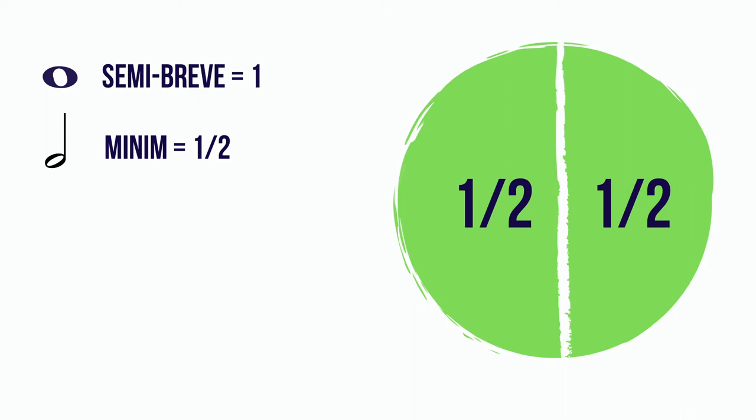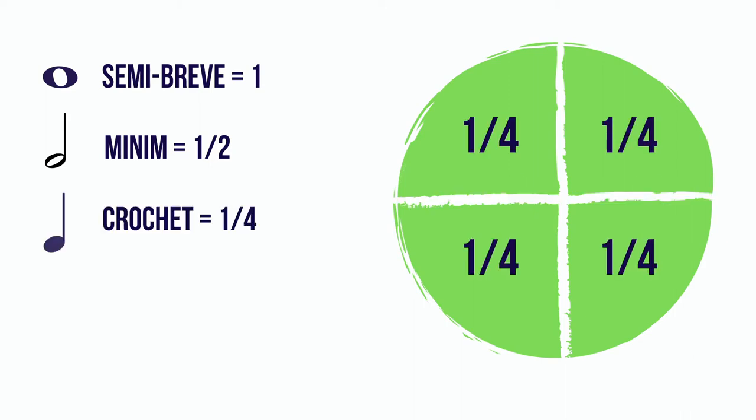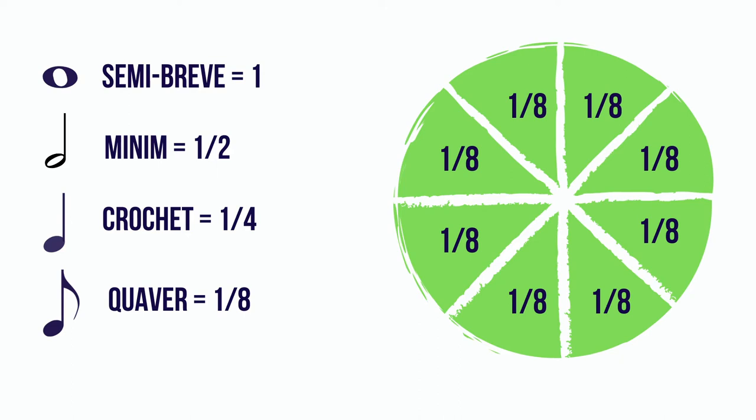If we cut the circle in half again, that gives us 4 quarters — a crotchet is known as a quarter note. And lastly if we cut the circle in half again we've got eighths, and an eighth note is also known as a quaver. So to recap: a semi-breve is a whole note, a minim is a half note, a crotchet is a quarter note, and a quaver is an eighth note.